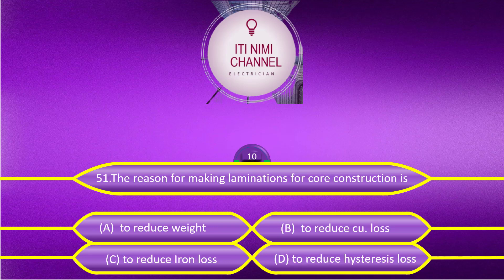The reason for making laminations for core construction is: Option A, to reduce weight. Option B, to reduce copper loss. Option C, to reduce iron loss. Option D, to reduce hysteresis loss.